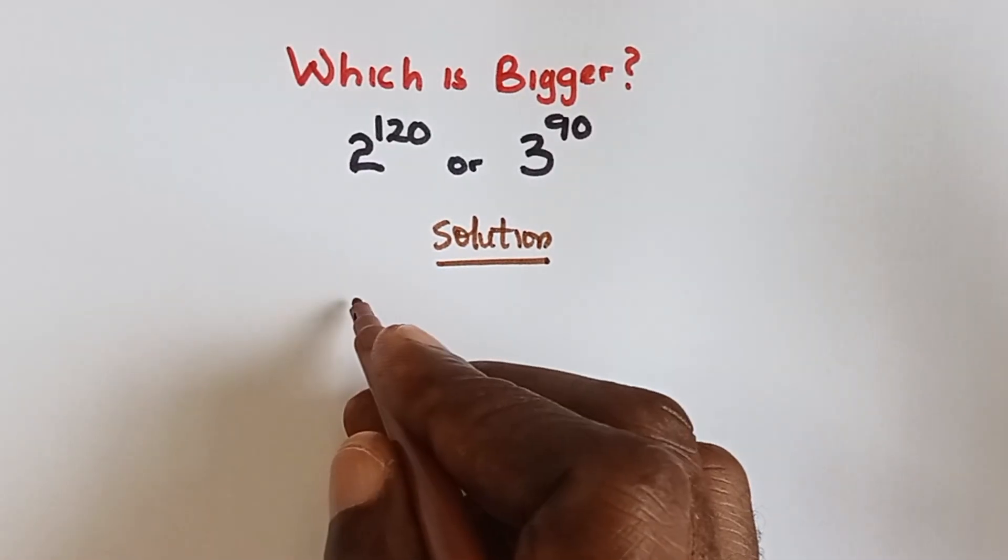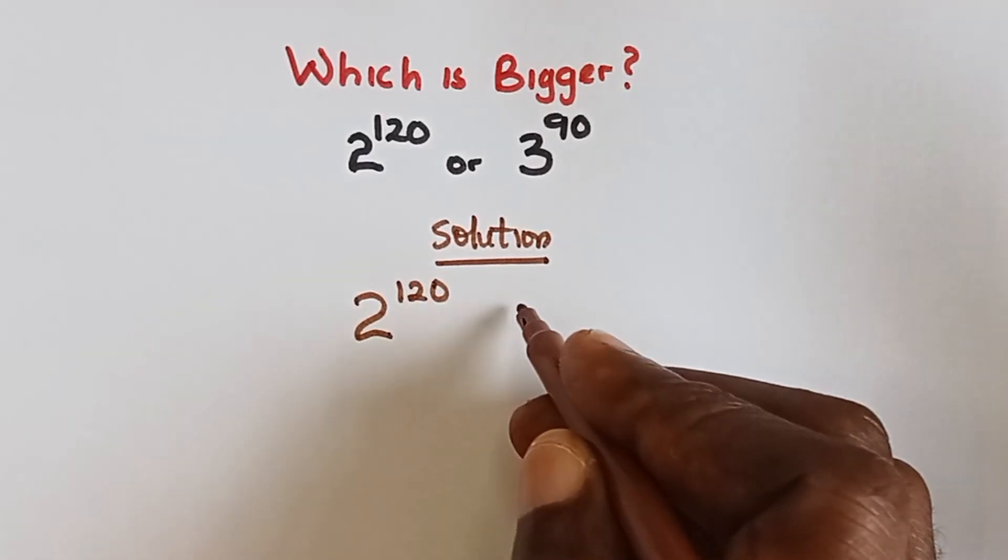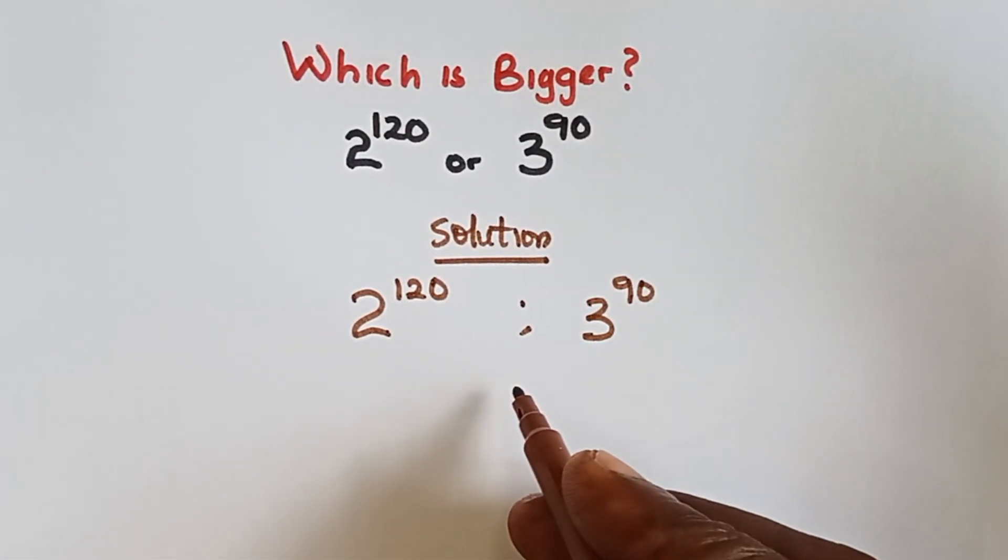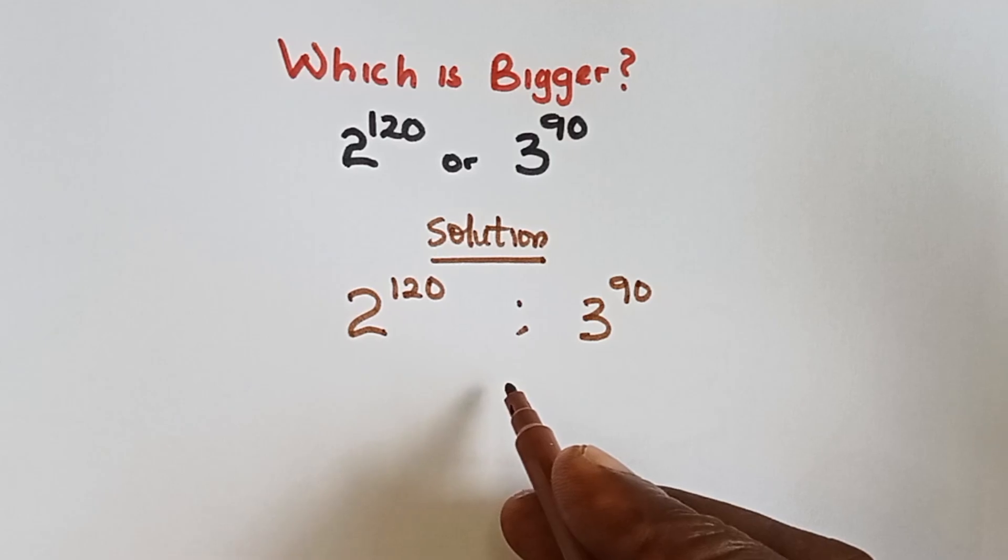Now, what we do, we have 2 raised power 120 and we have 3 raised power 90. So what we do here is we try to make them have the same power.